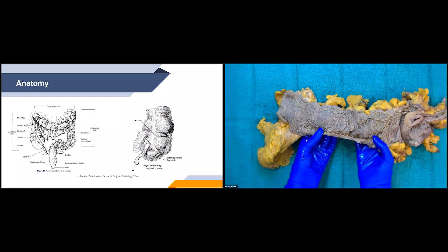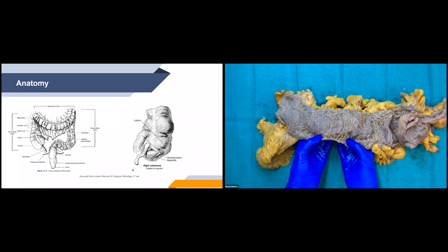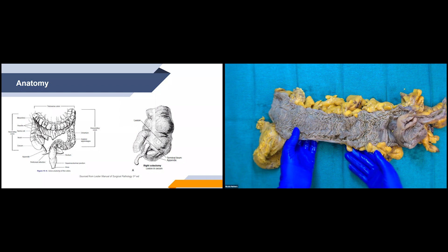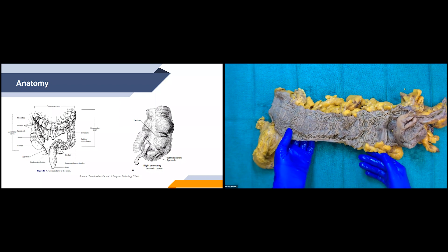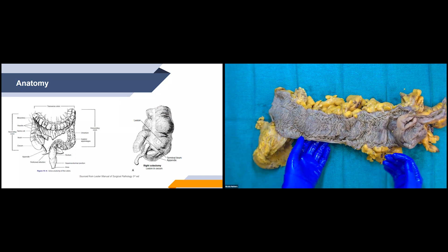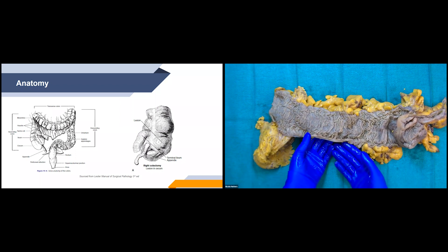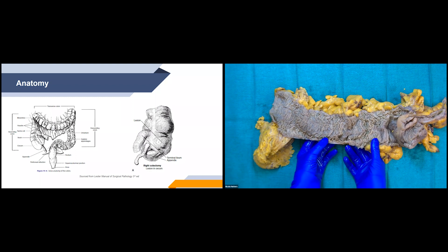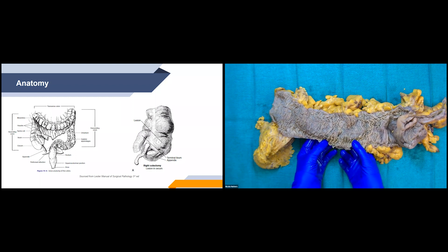So that's how we distinguish between the large bowel versus the small bowel. Another important aspect of anatomy to discuss with a right hemicolectomy specimen or any type of specimen is the artery and blood supplies.